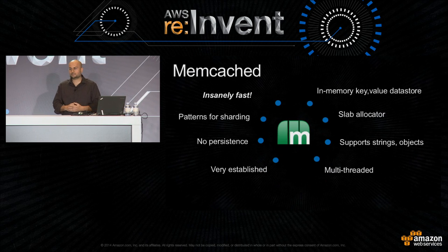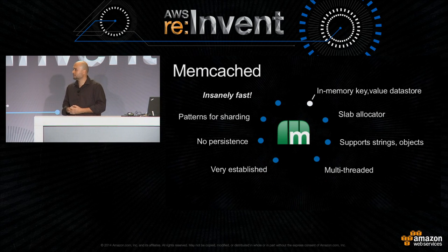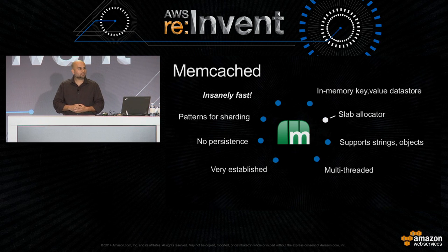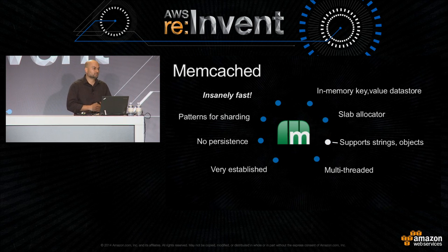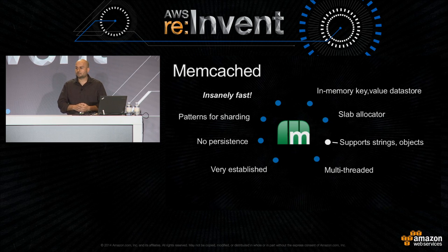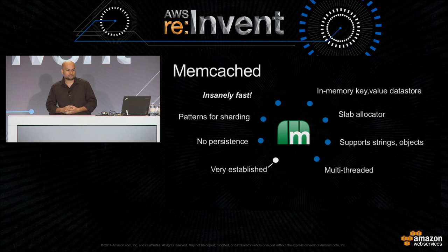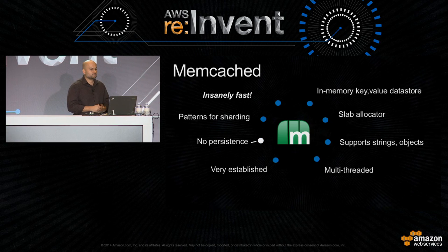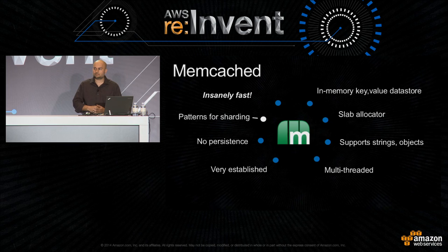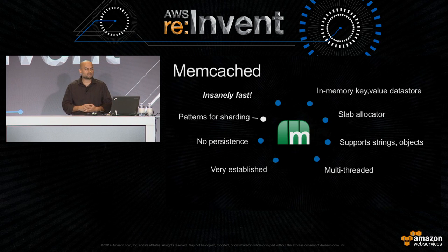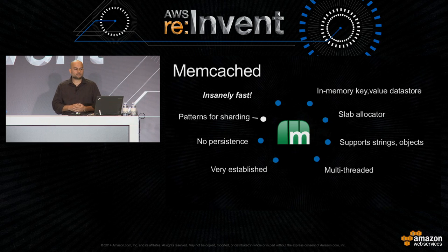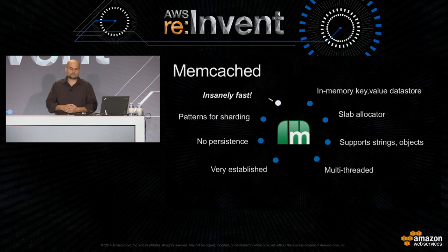Moving on to Memcached. Again, it's an in-memory key-value data store. It's a slab allocator model — we'll talk in a minute about what that means. It supports more simplistic data structures: essentially strings and objects that you can serialize and deserialize in and out of the cache. It's multi-threaded — in reality, it's actually several caches under one umbrella. It's very established; it's been around for a long time, the patterns and libraries are very established. It does not have persistence — you'd have to engineer that yourself. And just like Redis, it's insanely fast.